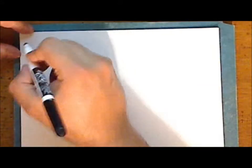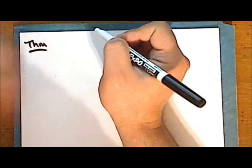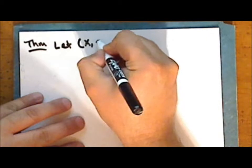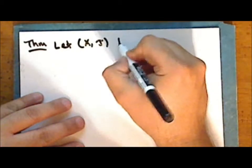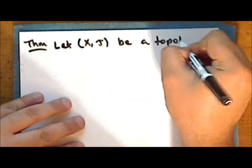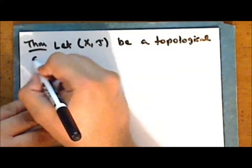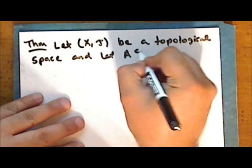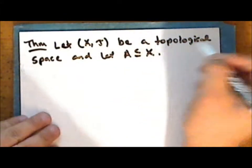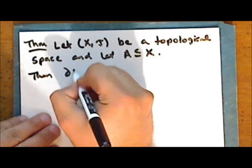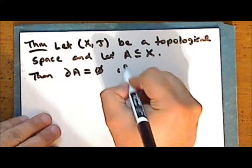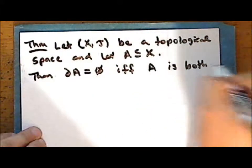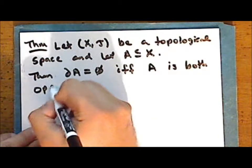We will now prove a theorem giving another property of the boundary of a set. Let the set X together with some topology tau be a topological space, and let A be a subset of X. Then the boundary of the set A is empty if and only if the set A is both open and closed.